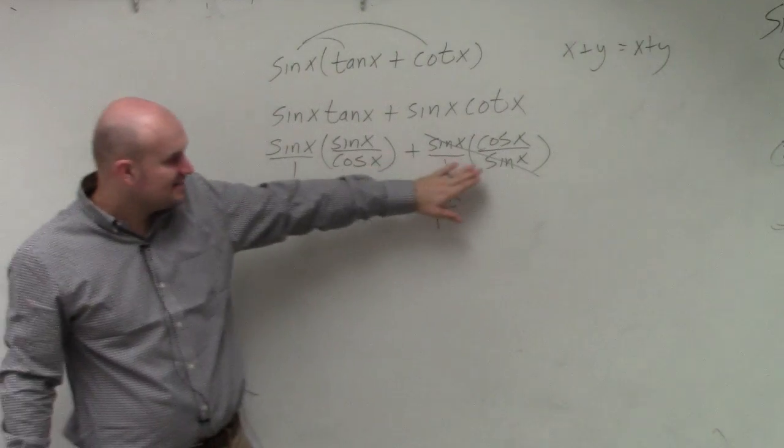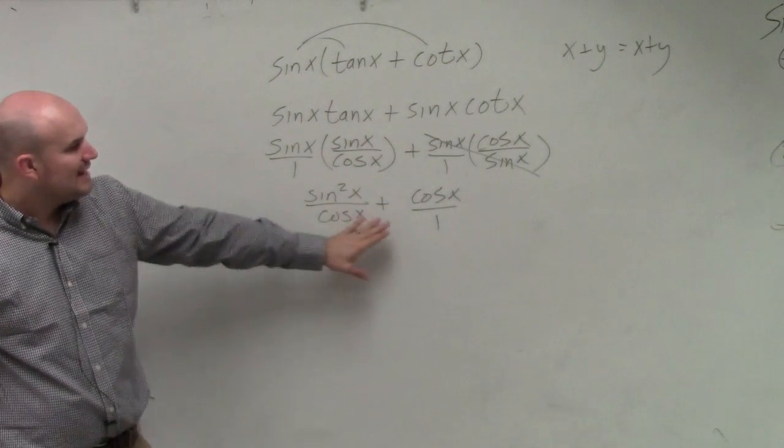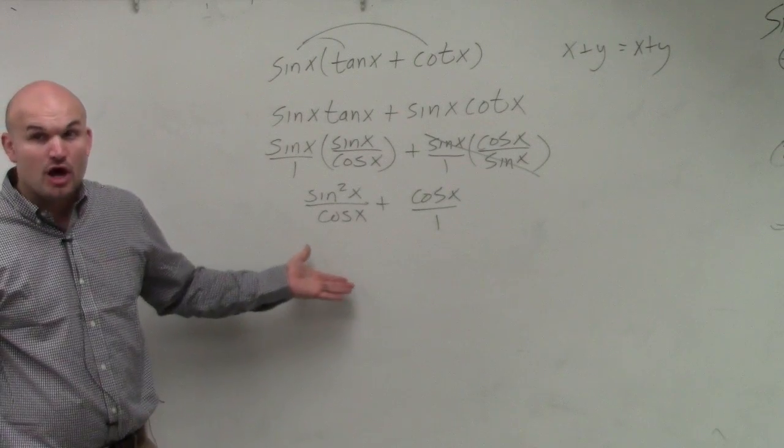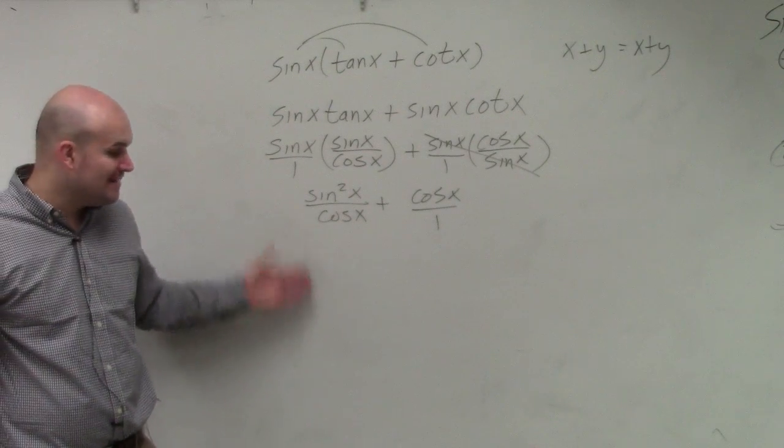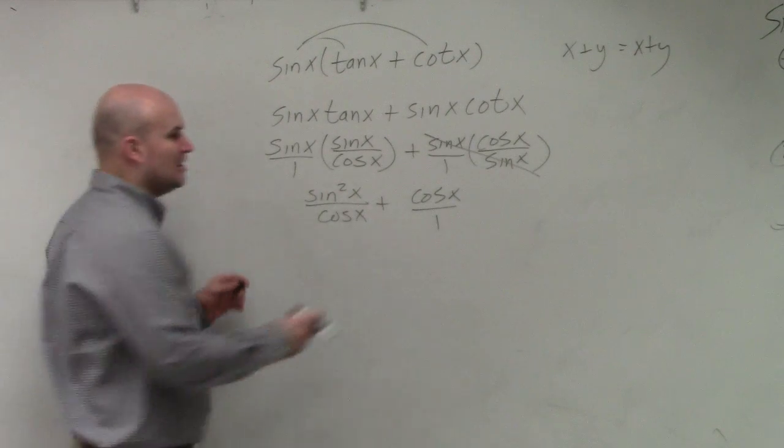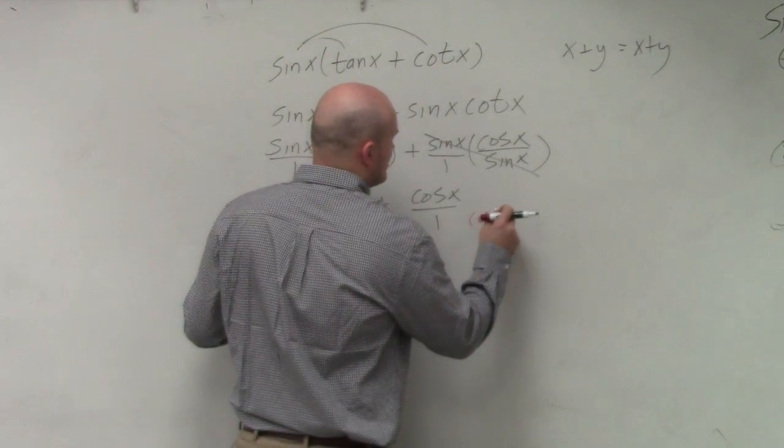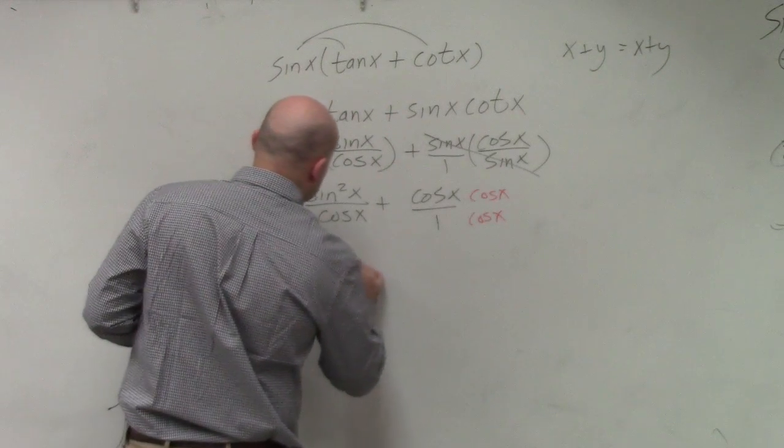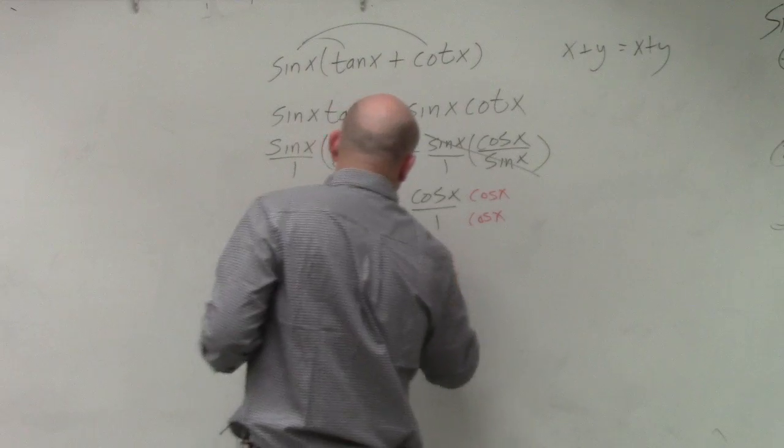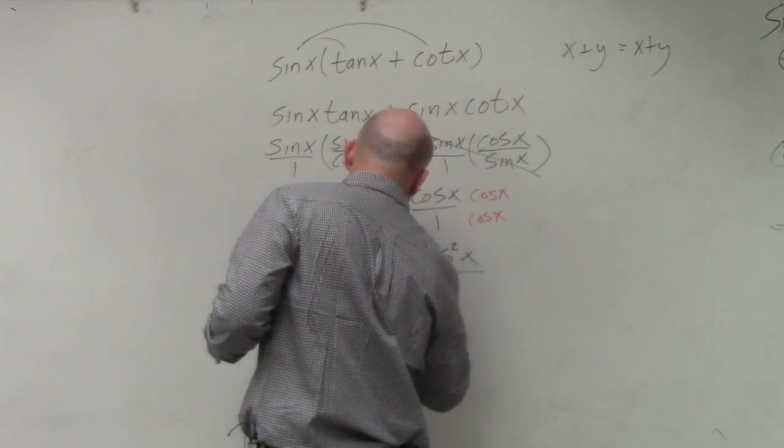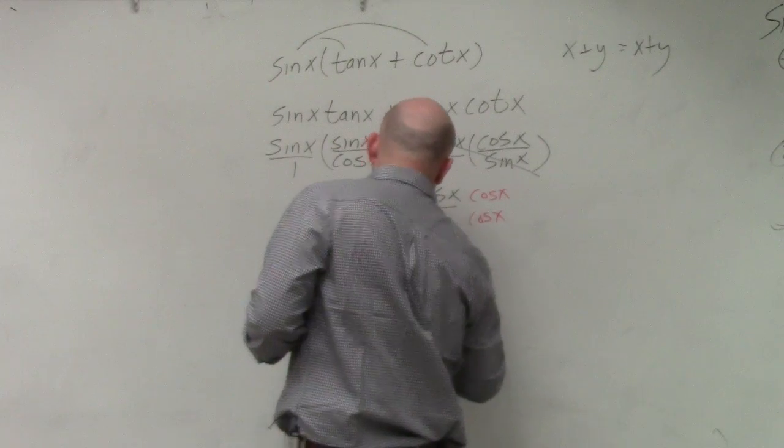So I rewrote them in terms of sines and cosines. Now, can I still add them? Can I add them right now? No. However, what do I need to do to make sure I can add them? I just need to have the same denominator. So I'll multiply by cosine of x on the top and the bottom. Now I have sine squared of x plus cosine squared of x all over the common denominator of cosine of x.